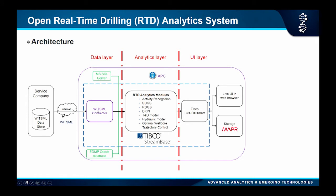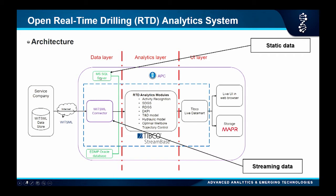This is our architecture. The data comes from here, goes through the connector, and is pushed to the analytics module layer. Right now we have about seven modules — some in production, some under development. We also have static data inputs, because models don't always use just streaming data. For example, a torque-and-drag model still needs information like the drilling pipe type and specifications, which lives in Anadarko's database. We feed that data in, run the model, and push the results — one goes to the UI, and one goes to the data store for longer-term storage.